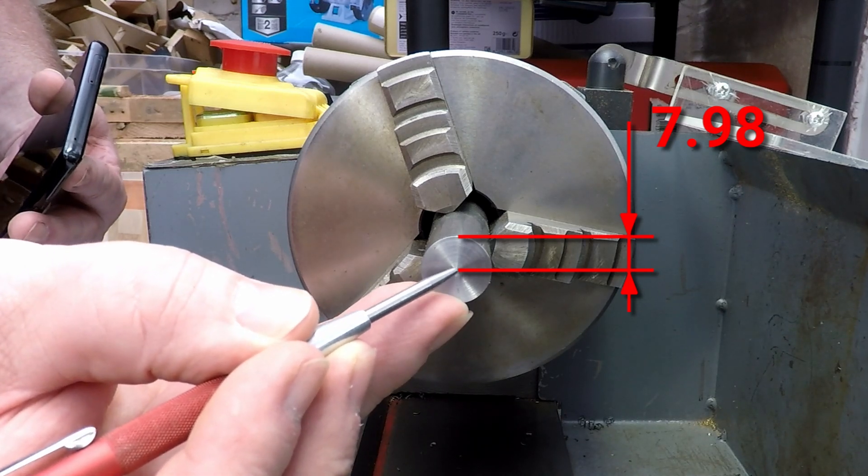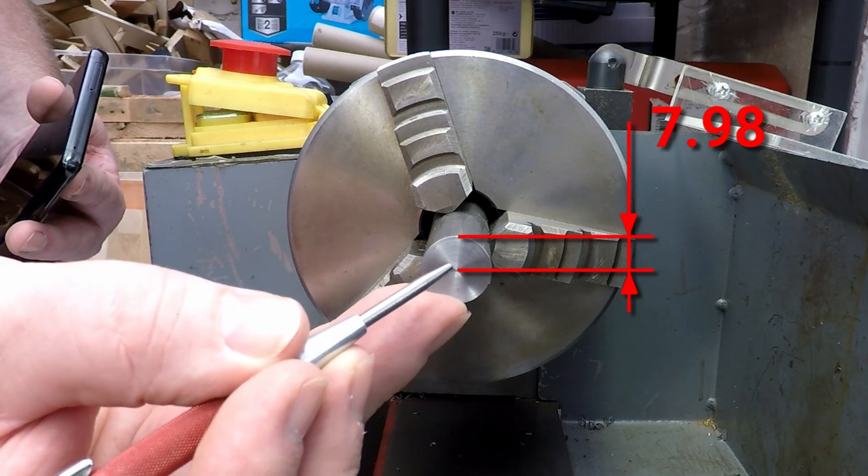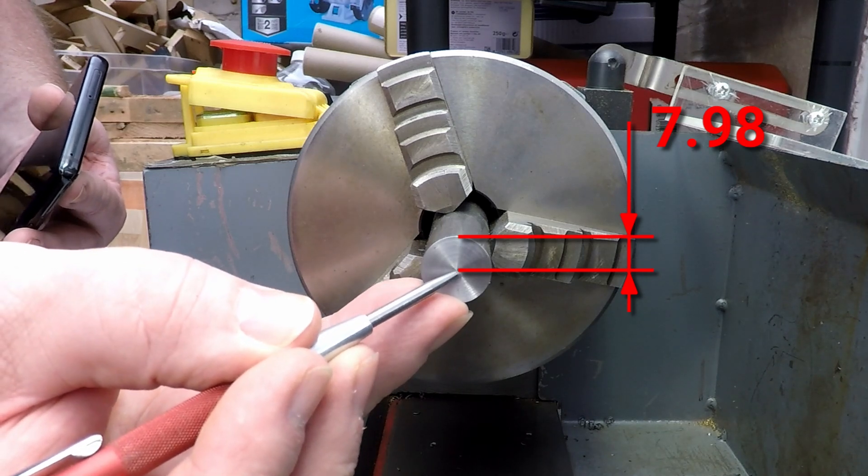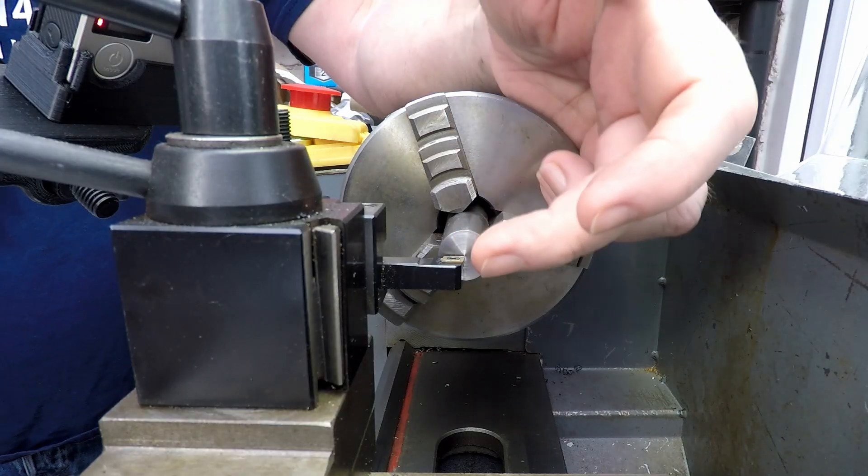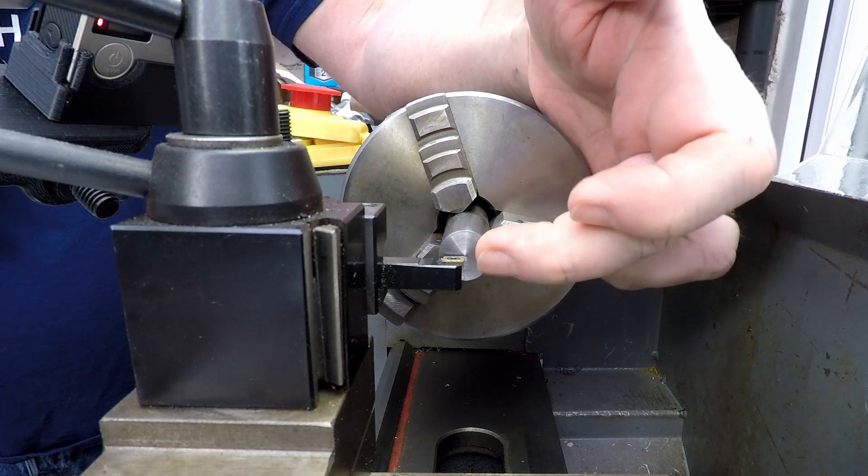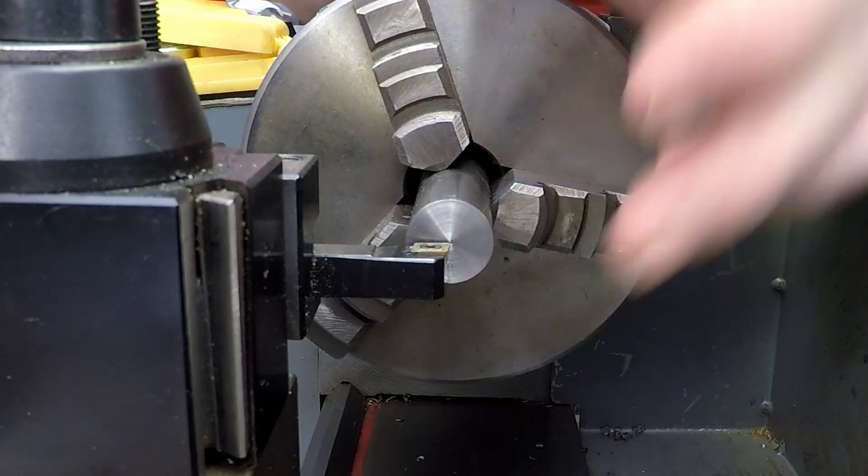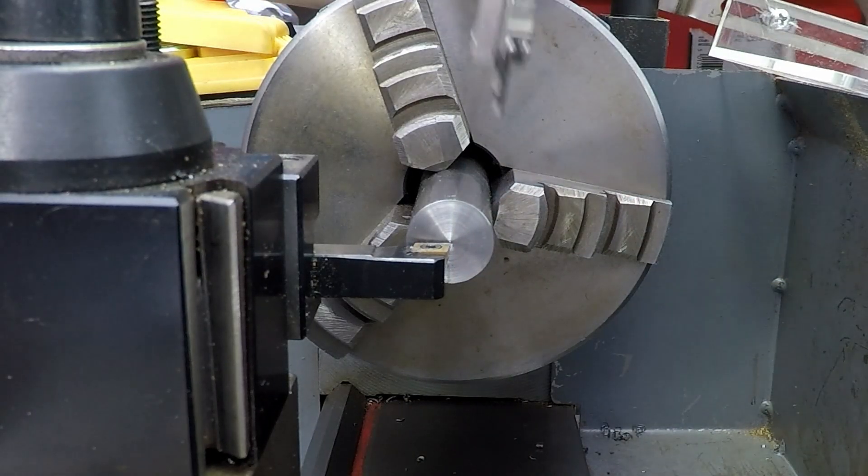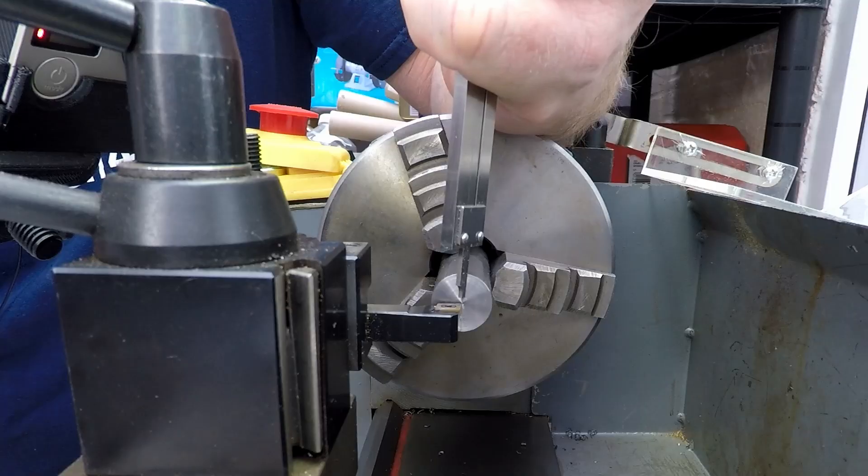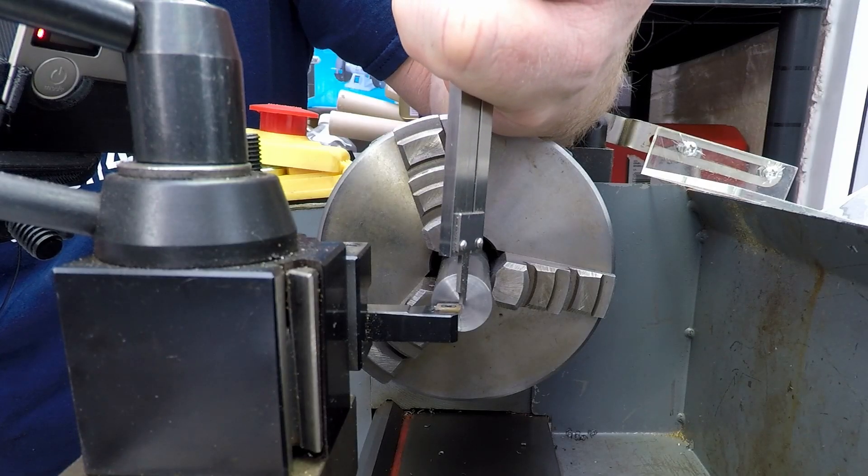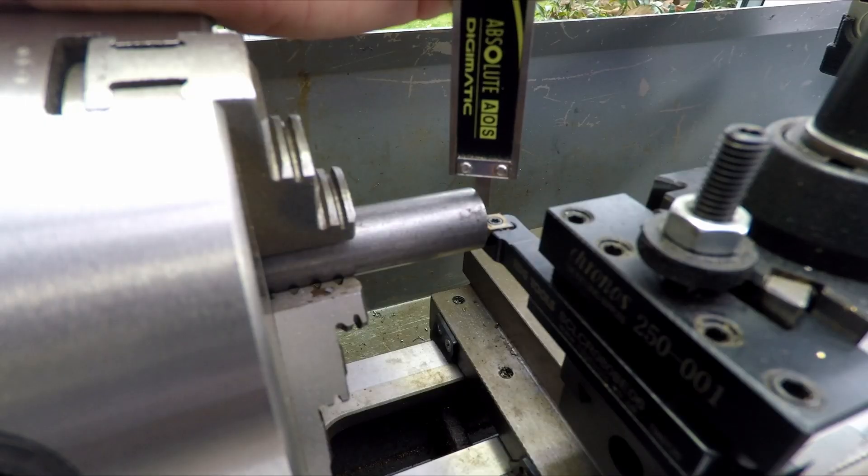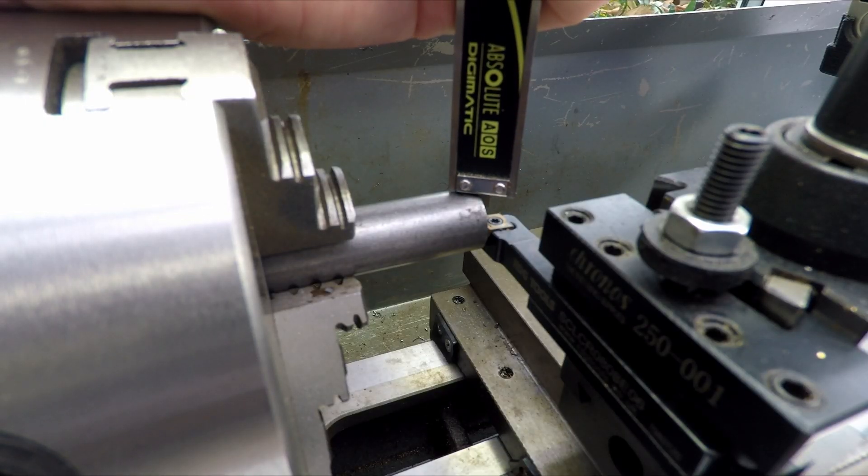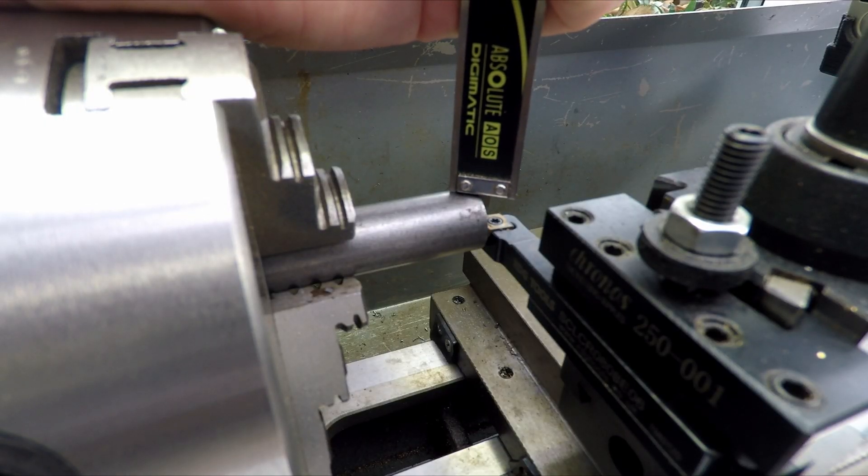We want our tool to be 7.98mm from the top of the bar to the center—half the diameter. We'll bring the tool in near the center, not quite touching the work. Then we get our caliper, put the end of the depth probe right on the edge of the tool, and bring the calipers down until they just touch the top of the work. You want to try and keep this as square as you can.